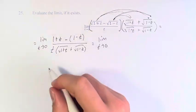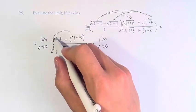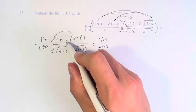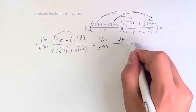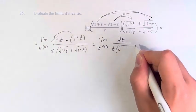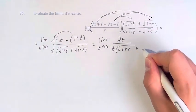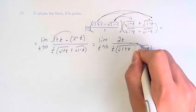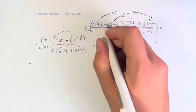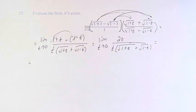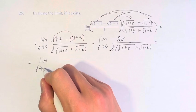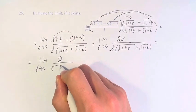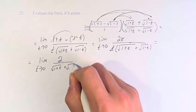Next, we have 1 minus 1, so those cancel. We have t minus negative t, which is t plus t, which is 2t. So we have 2t over t times the square root of 1 plus t plus the square root of 1 minus t. The reason we did all this is so we get 2t on top, and now we can cancel the t's to give us the limit as t approaches 0 of 2 over the square root of 1 plus t plus the square root of 1 minus t.